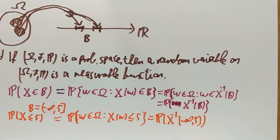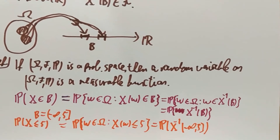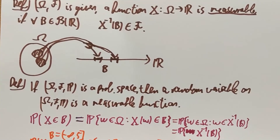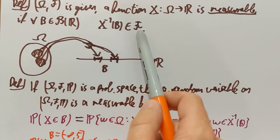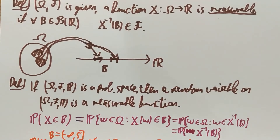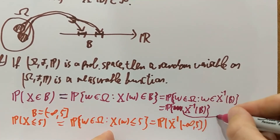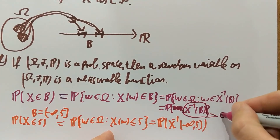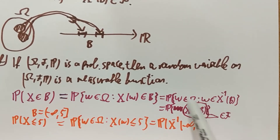So why does that make sense? Here's where all this story comes together. B is something from the Borel sigma-algebra. X is a measurable function. Going back to the definition: if B is in the Borel sigma-algebra and X is a random variable — so it's measurable — that means X⁻¹(B) belongs to the sigma-algebra F on the probability space (Ω, F, P). If it belongs to the sigma-algebra, then it makes sense to ask about the probability of X⁻¹(B), because this set is actually in the sigma-algebra, and anything in the sigma-algebra I can ask the probability of.